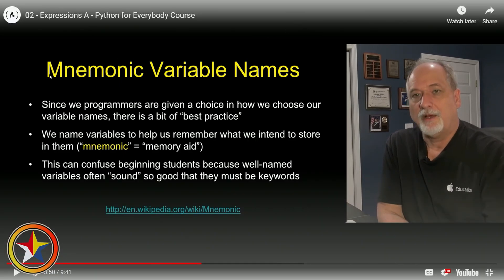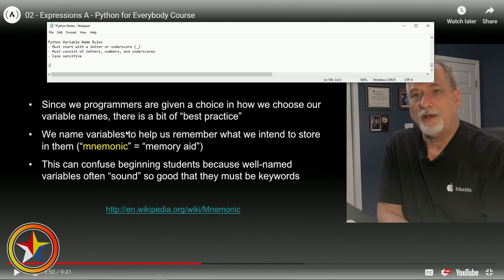Now: mnemonic - the M is silent, like in the Keanu Reeves movie Johnny Mnemonic. Let's write down 'mnemonic variable names' and see what they're talking about.